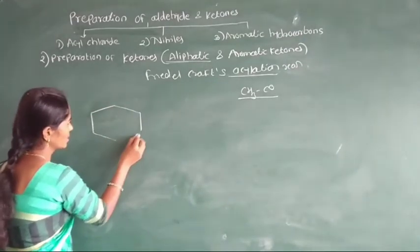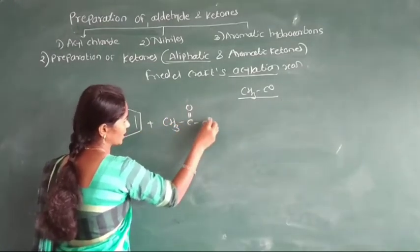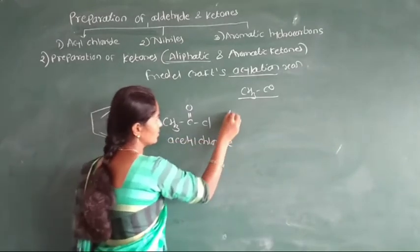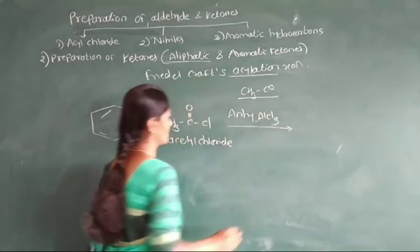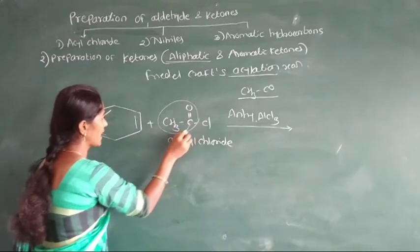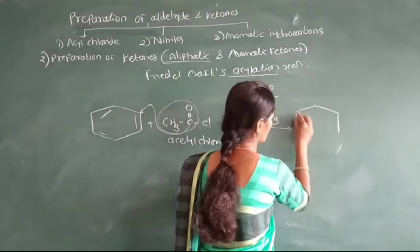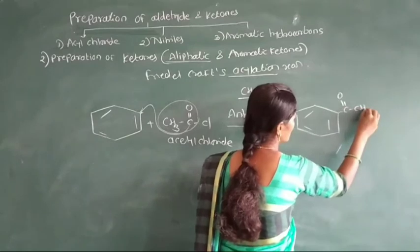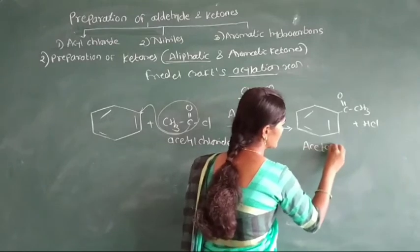For example, benzene reacts with acyl chloride, such as CH3COCl. In this reaction, the acyl group, CO-CH3, is added into one of the carbon atoms of the benzene ring. Here, formation of aromatic ketone — the product is C6H5COCH3 — which is called acetophenone.